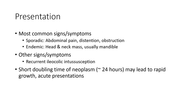Most common signs and symptoms of Burkitt lymphoma: acute abdominal pain, distension, obstruction, and an abdominal mass usually manifest. Other signs and symptoms include recurrent ileocolic intussusception. The tumor has a short doubling time of approximately 24 hours, which may lead to rapid abdominal distension or short presentation.